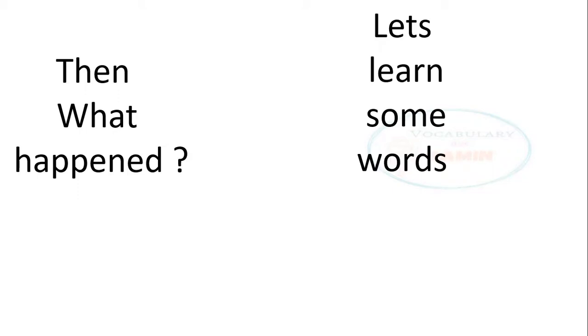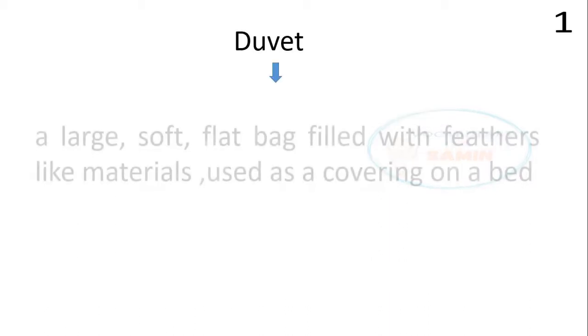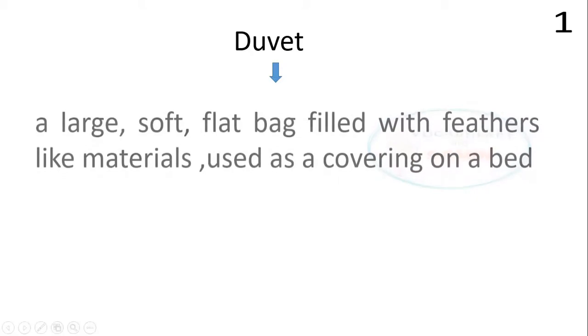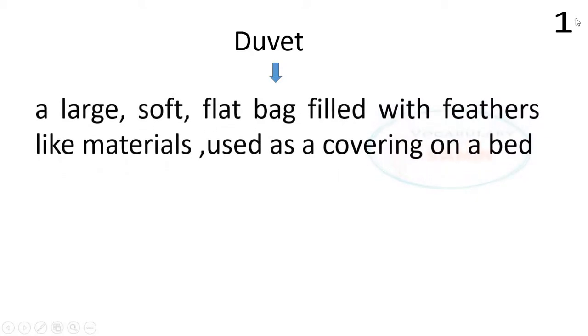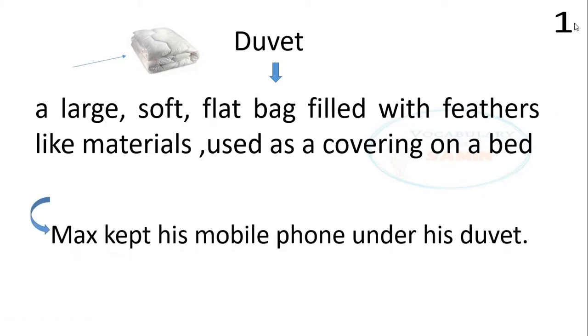And if the same story happens to you, tell me in the comment section. So the first word is 'duvet.' Duvet means a large, soft, flat bag filled with feathers or feather-like materials used as a covering on a bed. The sentence is: Max kept his mobile phone under his duvet.